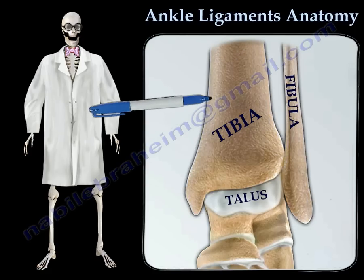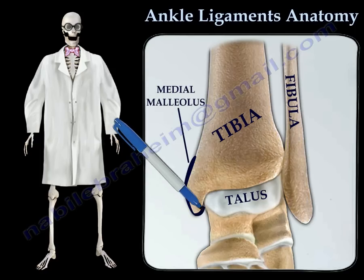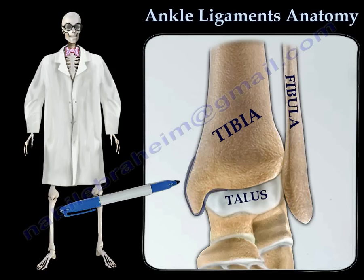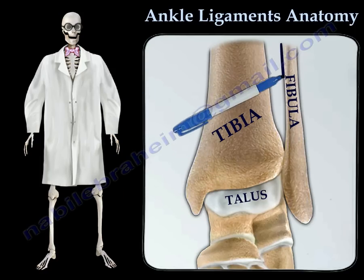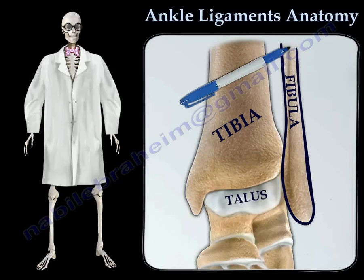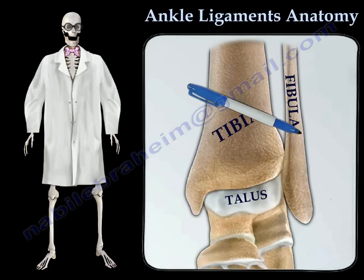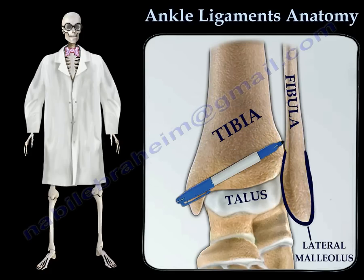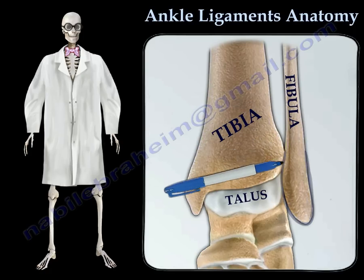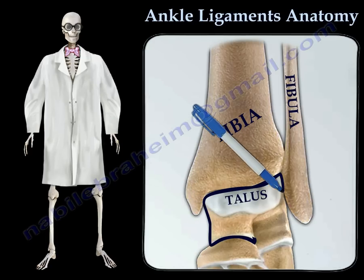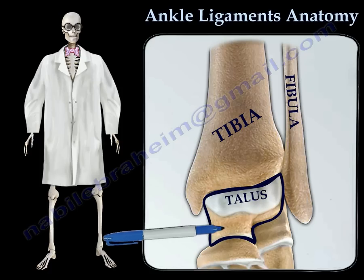At the ankle, the inside bump of the tibia forms the medial malleolus. The fibula is the smaller of the two bones in the lower leg, and its lower end forms the lateral malleolus. In the ankle joint, the talus articulates with the tibia and is involved in multiple movements of the foot.